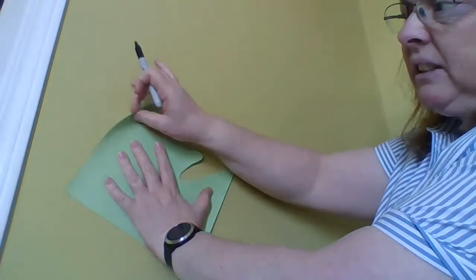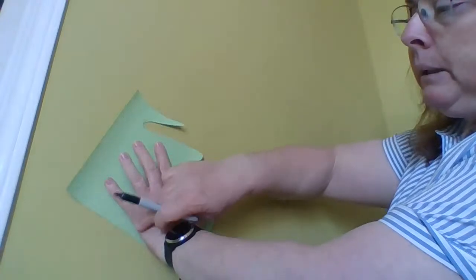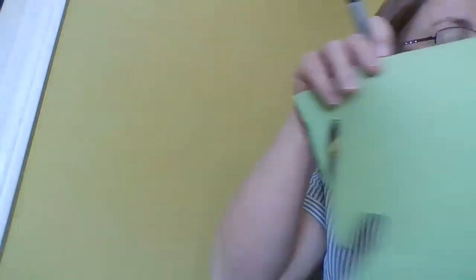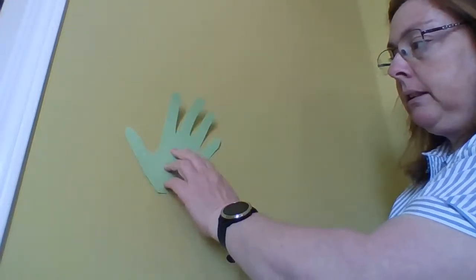I'm not actually tracing it because I don't want to go through onto the wall. So I trace it, and then once I get my hand shape, I'm going to cut it out. And then after I've cut it out, I'm going to wind up with my sheet that's going to look like that.